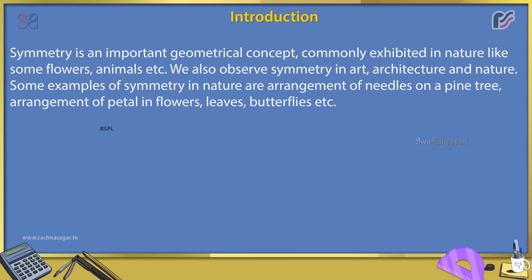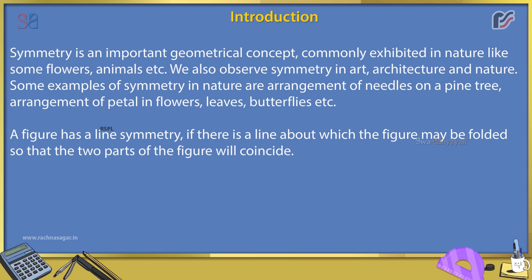Some examples of symmetry in nature are arrangement of needles on a pine tree, arrangement of petals in flowers, leaves, butterflies, etc. A figure has line symmetry if there is a line about which the figure may be folded so that the two parts of the figure will coincide.